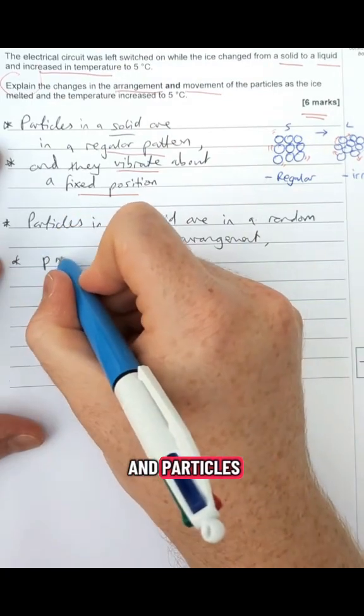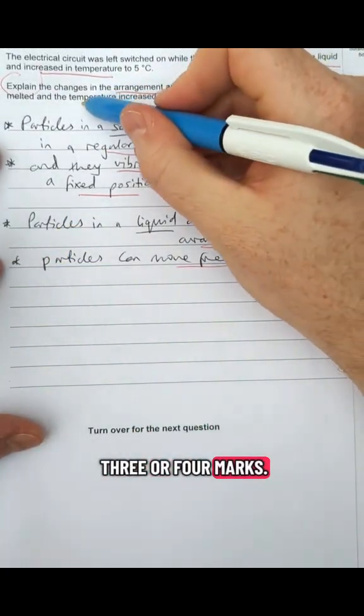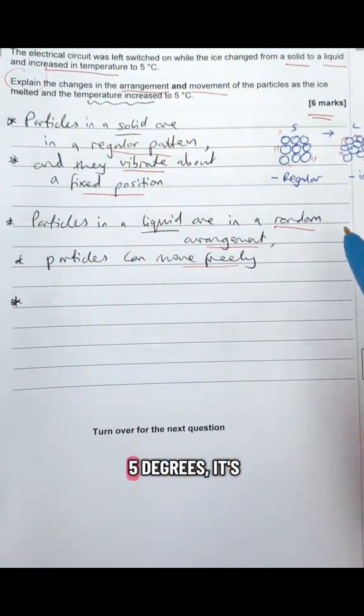and particles can move freely. That will probably get you up to about three or four marks. We've then got to talk about what happens when the temperature increases to five degrees.